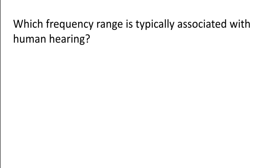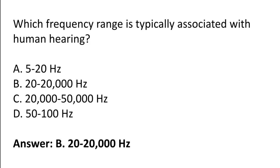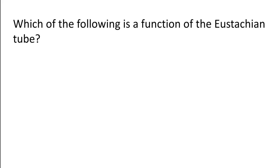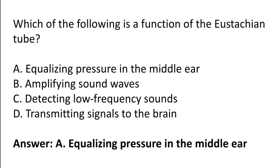Which frequency range is typically associated with human hearing? Which of the following is a function of the Eustachian tube? Options: equalizing pressure in the middle ear, amplifying sound waves, detecting low frequency sounds, transmitting signals to the brain. The correct answer is option A — the function of the Eustachian tube is equalizing pressure in the middle ear.